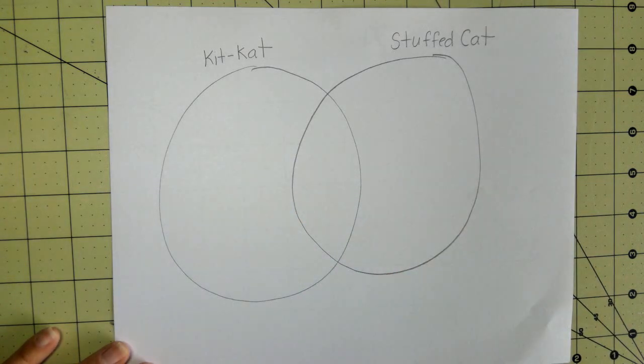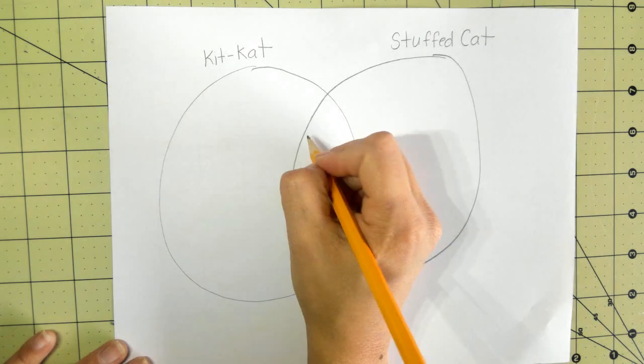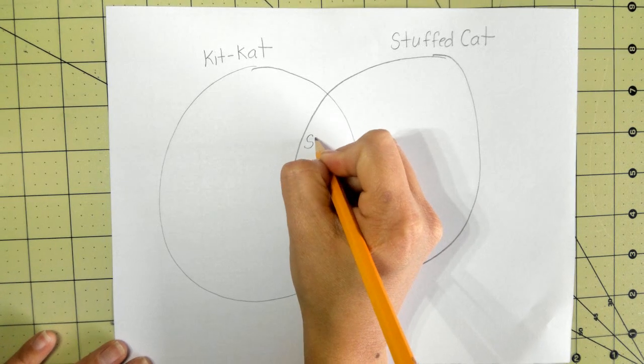So what was one way that we said they were the same? Very good, we said that they were both soft. So here I'm going to write the word soft because when I touched them they both felt soft.